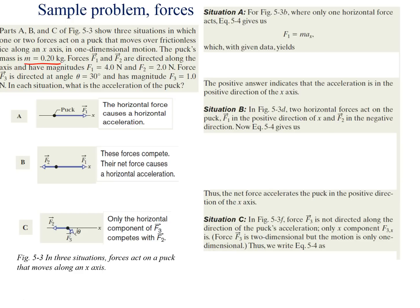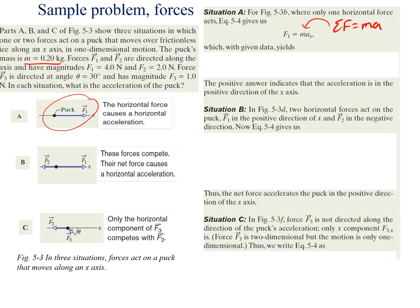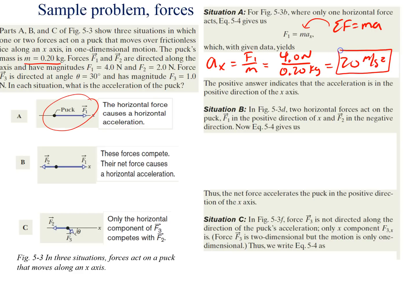Looking at situation A first: a single horizontal force causes a horizontal acceleration. Using the equation — summation of forces equals ma — all forces acting in situation A are just F1, so F1 equals ma. Rearranging for acceleration and plugging in values: 4.0 newtons divided by 0.20 kilograms equals 20 meters per second squared. Since the answer is positive, the acceleration is in the positive x-direction — the puck accelerates to the right.